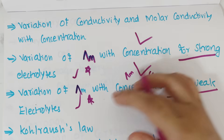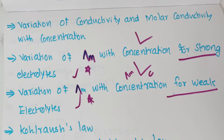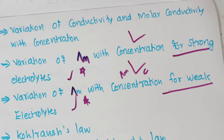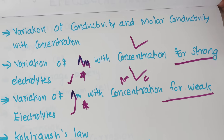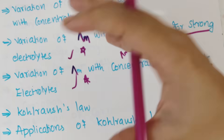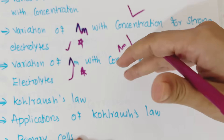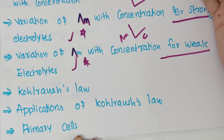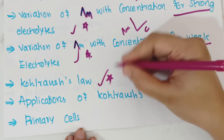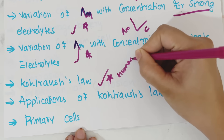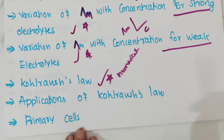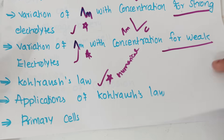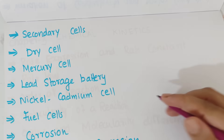Their limiting conductivity and concentration — these are questions covered in these classes. How do you use primary cells? What is the difference between primary cells and secondary cells?